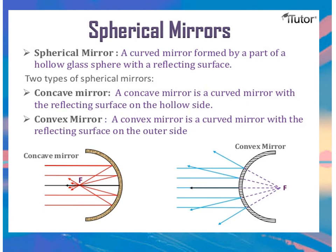In a convex mirror, it is a curved mirror with a reflecting surface on the outer side. So for a concave mirror, the reflecting surface is inside, while for a convex mirror, the reflecting surface is on the outside.